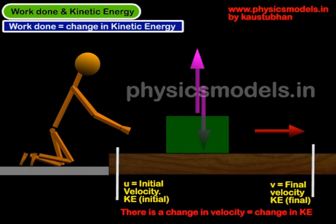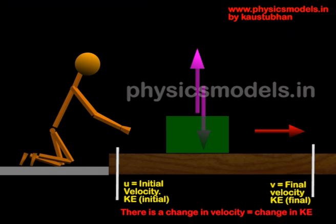Now coming to kinetic energy. When the block got pushed forward, it changed its velocity from an initial velocity, let's say u, to a final velocity, let's say v. So its kinetic energy is half mv squared at the final point, and the initial kinetic energy is half mu squared. So there has certainly been a change in its kinetic energy.